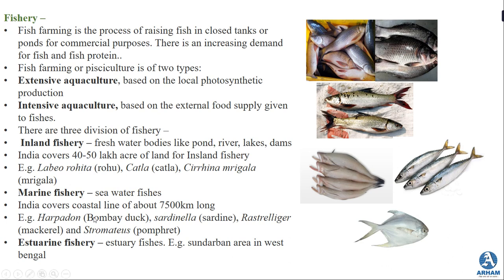Inland fishery refers to freshwater bodies like ponds, rivers, lakes, and dams. India covers 40 to 50 lakh acres of land for inland fishery. The three main inland freshwater fishes are Labeo rohita (rohu fish), which is very common and famous, Catla (katla), and Cirrhinus mrigala (mrigala).